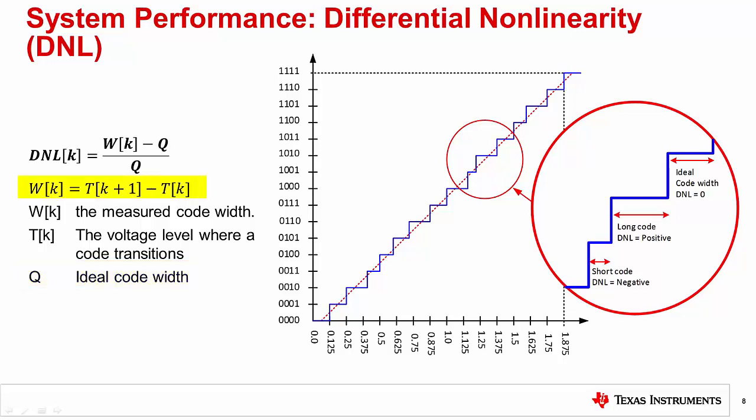The measured code width is calculated by subtracting the two adjacent code transitions TK and TK minus 1. If the measured code width is equal to the ideal code width, the DNL is 0. If the measured code is longer than the ideal code, the DNL is positive. And if the measured code is shorter, the DNL is negative.